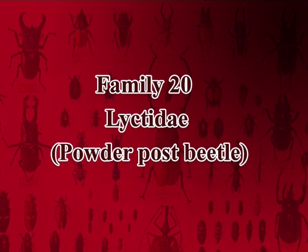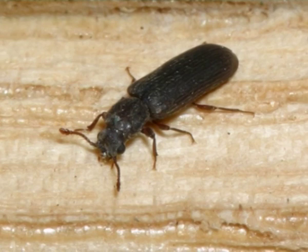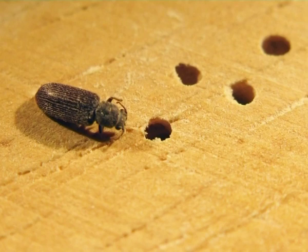The twentieth family is Lyctidae or powder post beetles. They are slender, elongate, reddish-brown beetles. Pronotum is flattened; head is prominent from above. Antennae have 11 segments with 2 segments clubbed. Their parallel-sided body is distinct. They cause small holes in the wood. Lyctus brunneus is often found in freshly cut and old timber or furniture.